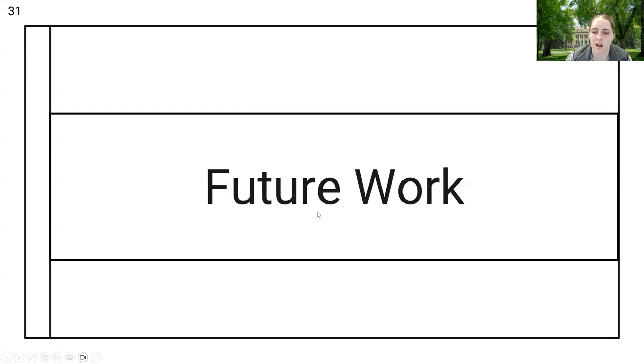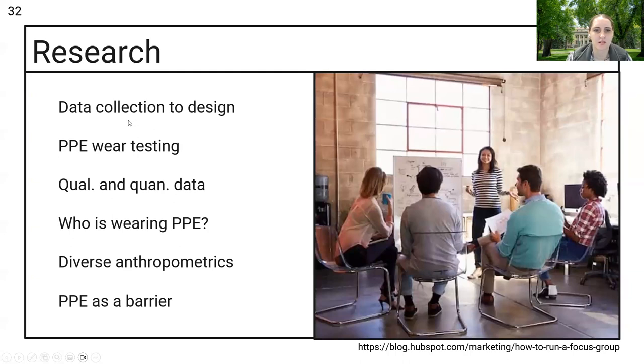There are some areas for future work. In terms of research, it has been said that research should go from data collection all the way through to design. We need to be doing wear testing of this PPE that is developed so that we understand where the issues are. Apparel design is often a feedback loop system. Qualitative and quantitative data together are very strong. We need to understand what the issues are from the word of mouth of people and what the issues are in terms of the measurements.